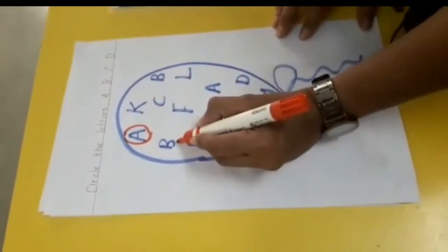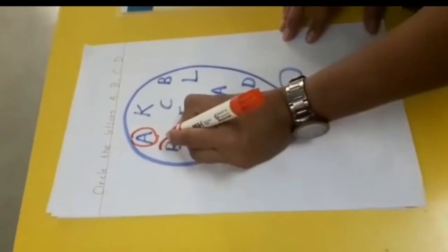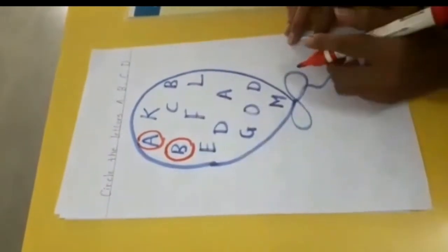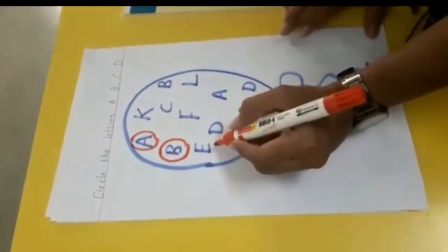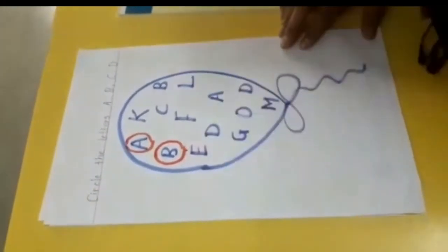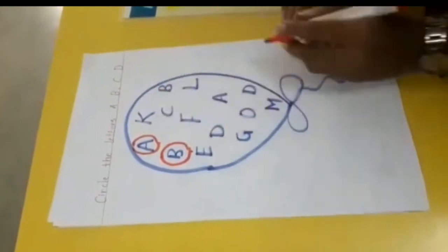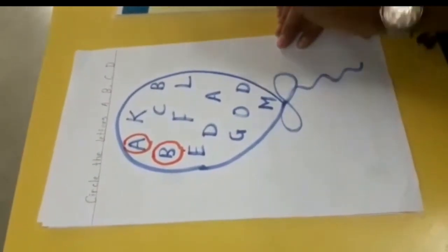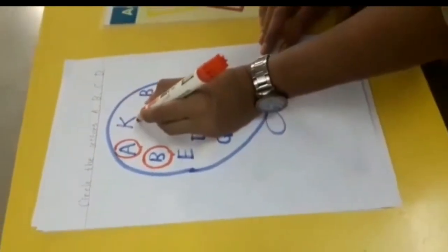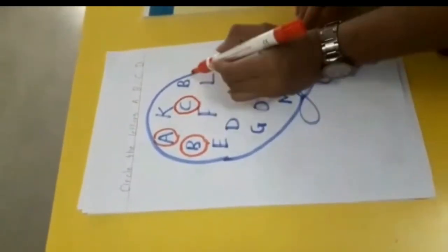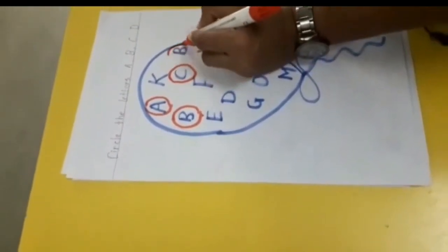Which letter is this? You know it very well. This is letter B, so we will circle it. Which letter is this? This is letter E, so what will we circle? No — we have to circle only letters A, B, C and D. Tell me which letter is this? This is letter C, so we will circle it. Which letter is this? This is also letter B, so we will circle it.